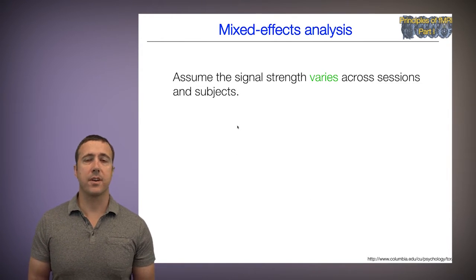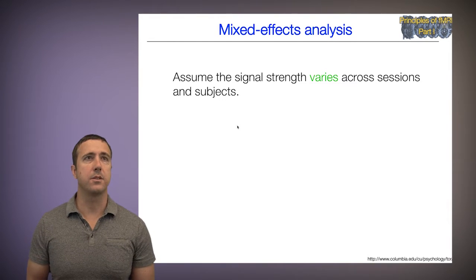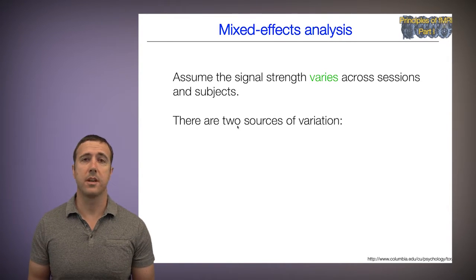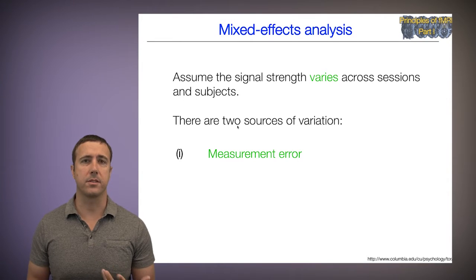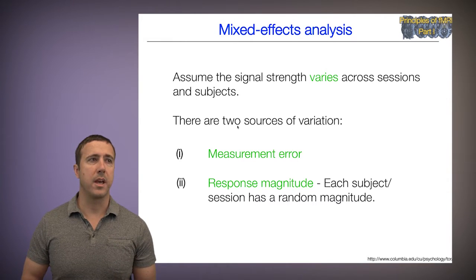So in a mixed effects analysis, let's assume the signal strength varies across sessions and subjects. There are two sources of variation. One is measurement error. That's all the stuff I can't account for with the experimental design. Could be head movement related, could be lots of things.